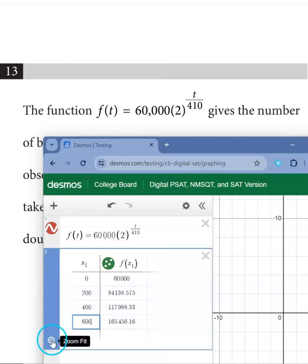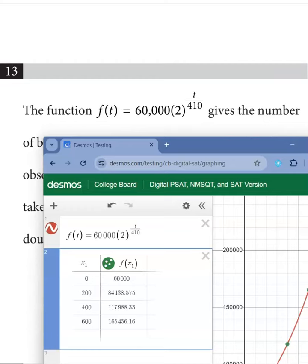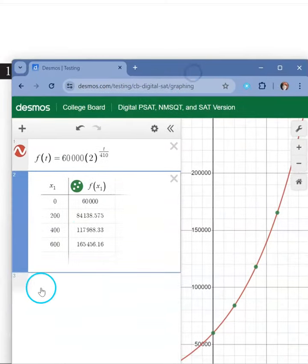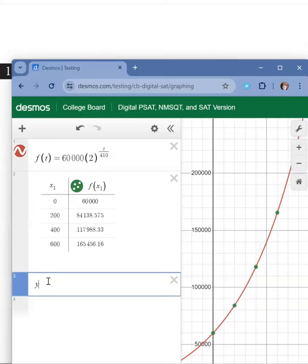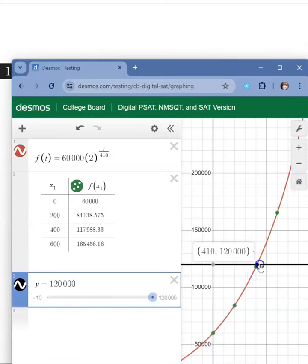Once you do, click on the plus sign to get zoom fit. Go to the next row of the calculator and type Y is equal to 120,000. Look for the line in the graph and click the point where they cross.